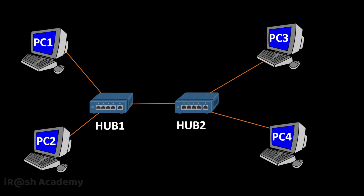Now consider another scenario where four devices are connected to two network hubs — Hub 1 and Hub 2. Is there a difference from the previous scenario? No, because a network hub has only a single collision domain, even when connected in a chain with multiple hubs. Even though we are using two network hubs, the entire network has only a single collision domain, because each hub carries its single collision domain, and connected hubs share that same domain.